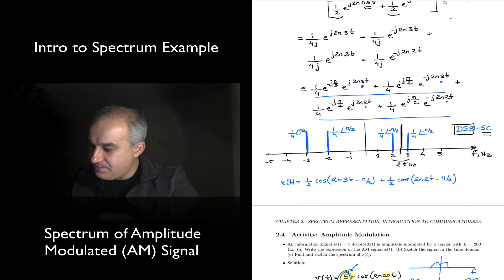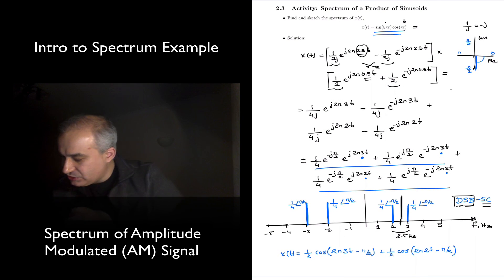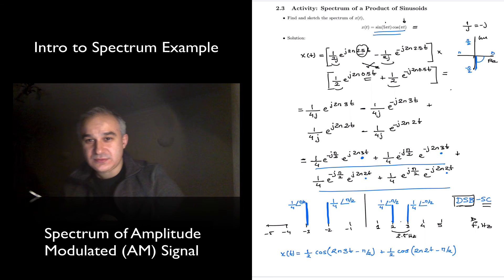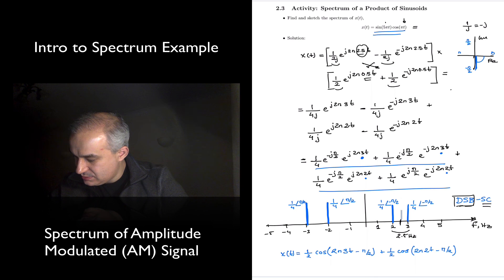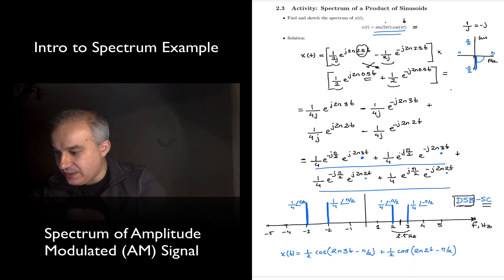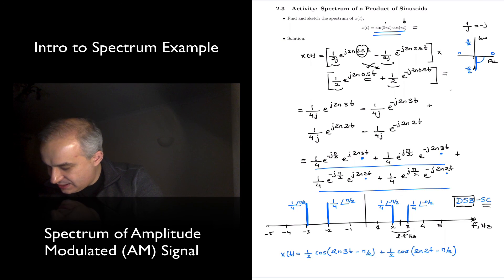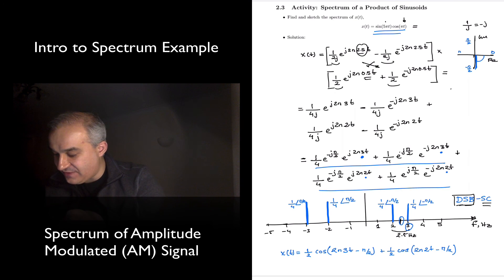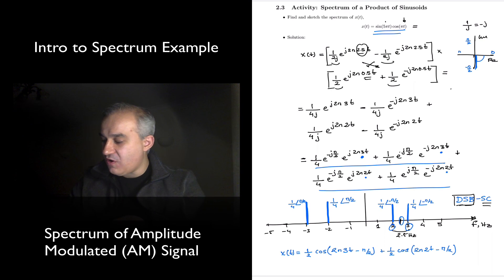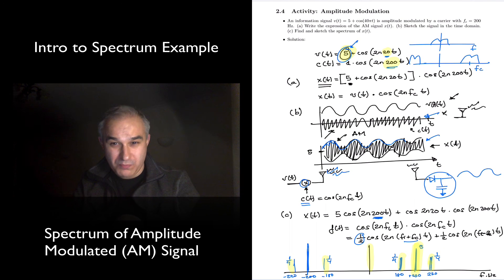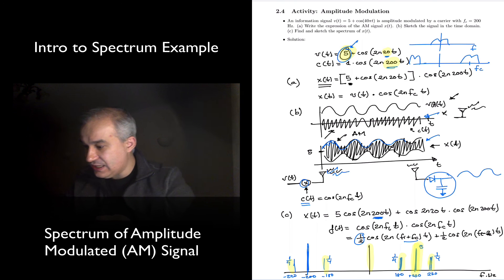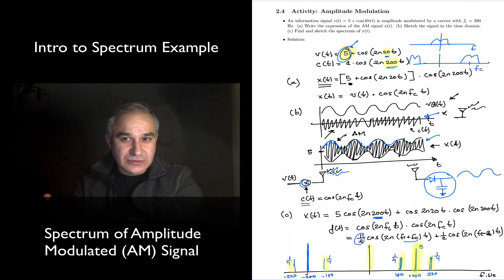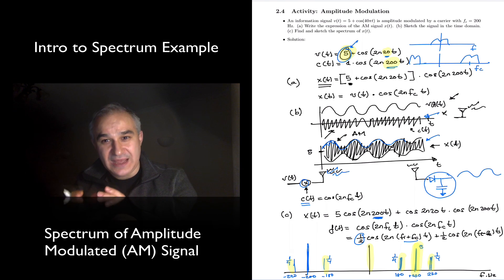Now if you don't add the DC component, you have the suppressed carrier situation. Notice you do not see the carrier, but you still see the side lobes where the carrier was supposed to be. In the previous problem, for example, we had a carrier at 2.5 Hz, and then side lobes at 2.5 + 0.5 = 3 Hz and 2.5 − 0.5 = 2 Hz. This is the characteristic spectrum of all amplitude-modulated signals. You'll go into more detail in a communications course on how to design these transmitters and receivers. At this point, the application is to understand the spectrum of sinusoids when you multiply them, which comes up, for instance, in amplitude modulation. Thank you.